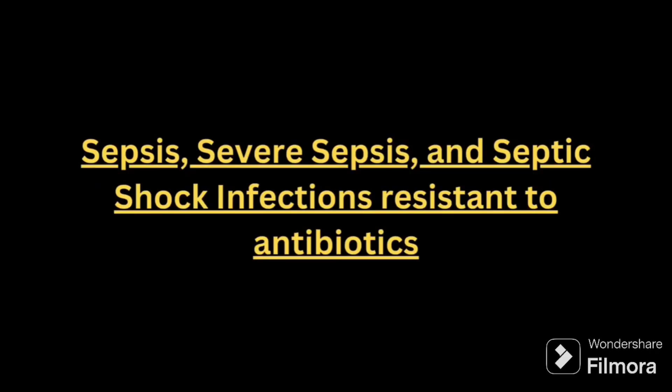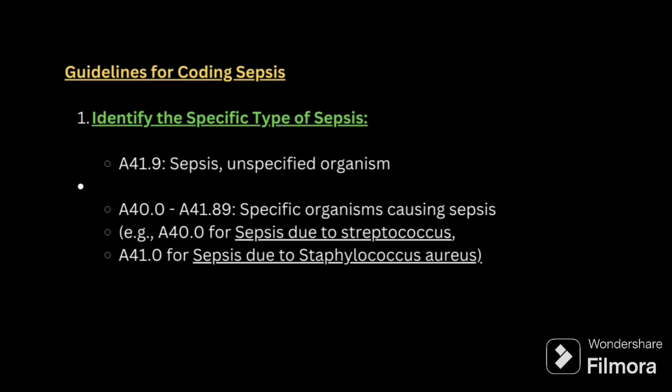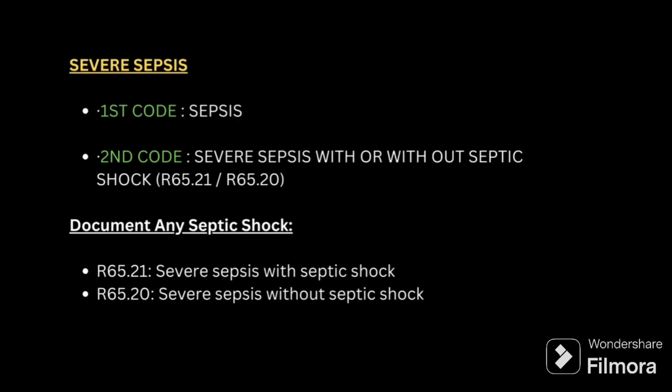Today we will be seeing about sepsis, severe sepsis, and septic shock — infections resistant to antibiotics. This is Chapter 1's second part; we already covered HIV and now we cover sepsis. First guideline: identify the specific type of sepsis. If a patient is coming to the hospital for treatment of sepsis, the primary code should always be for sepsis. If the organism is unspecified, code A41.9; if the organism is specified, assign the specific organism code.